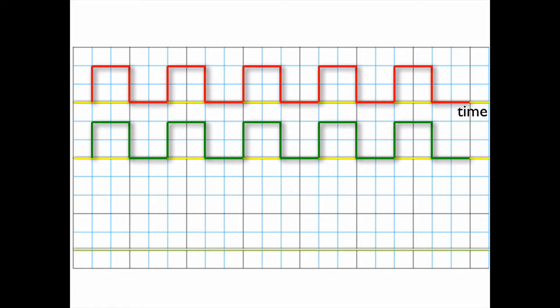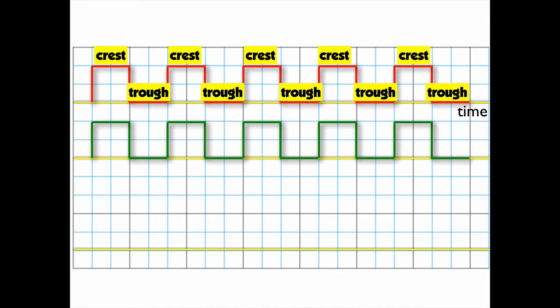I'm going to start by looking at not a sine wave, but a square wave, because it's easier to see what's going on. And the square wave is like a sine wave. It has a crest, and it has a trough. And the crest and trough can repeat over time, just like a sine wave would do.